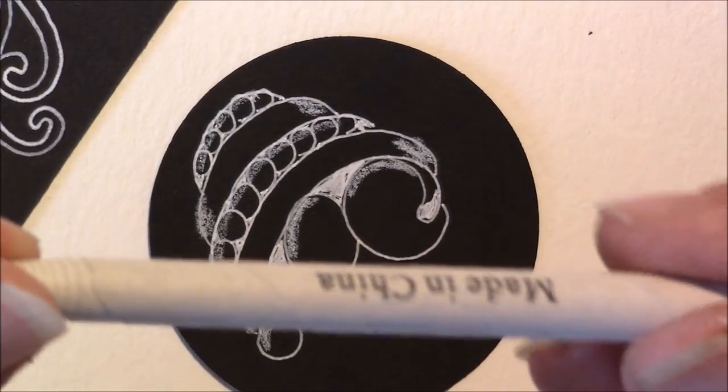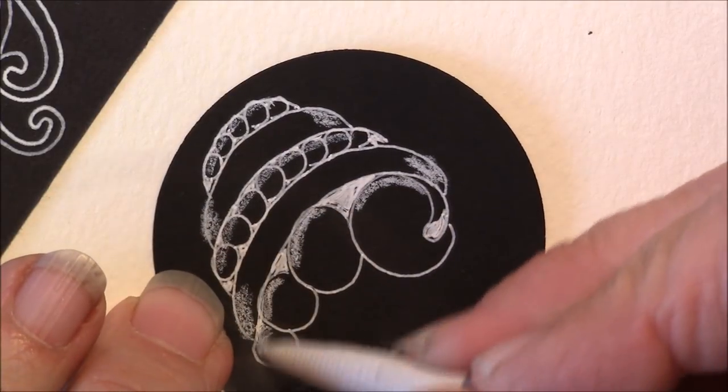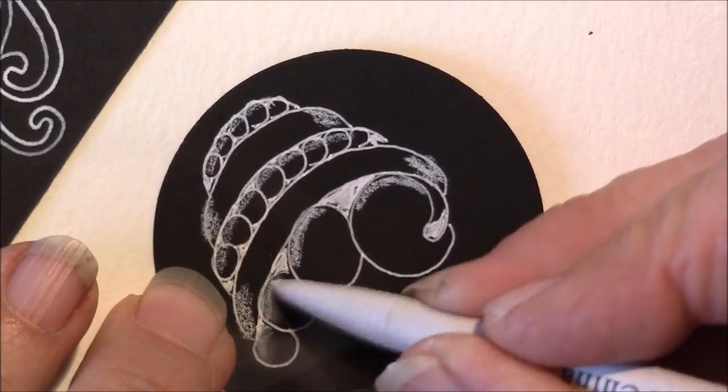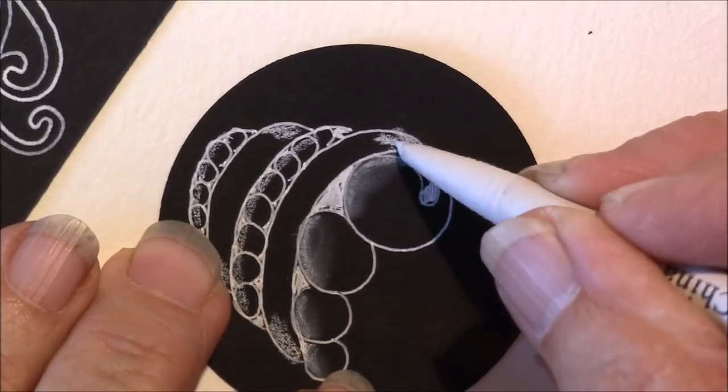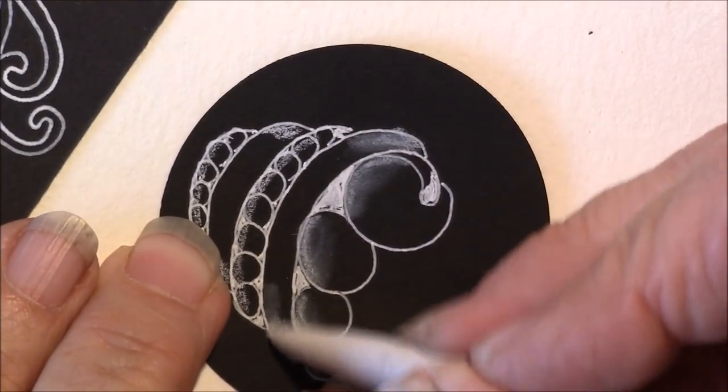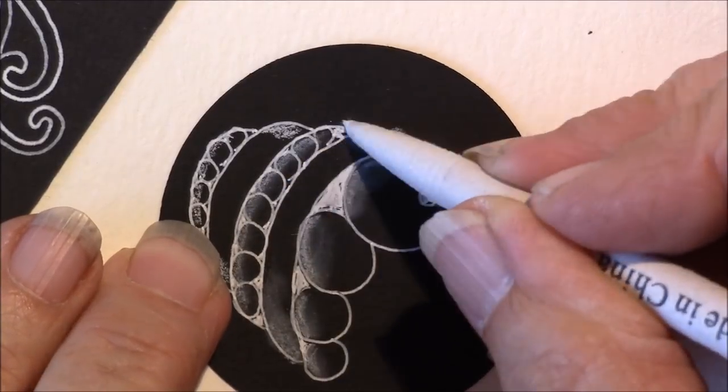Then I'm going to take my shading stump that I've used for white. Molly Hollybell marks hers with a W or a B for black, but I just clean mine with an emery board, and then I don't have to worry about it. We're just going to smooth out that chalk.